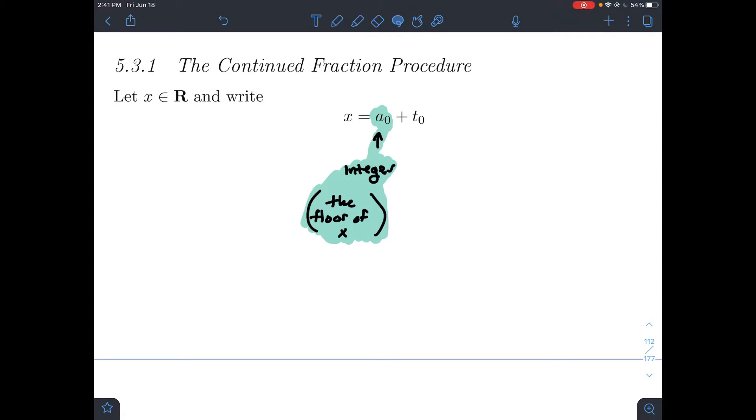Let me tell you a little bit about what a0 and t0 are. a0 is an integer, and it's called the floor of x. You should think of this as what is the largest integer that is less than or equal to x? And t0 is the decimal part that you have left, so the part between 0 and 1.